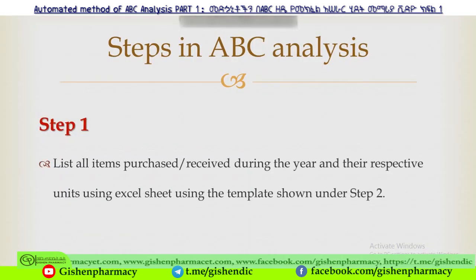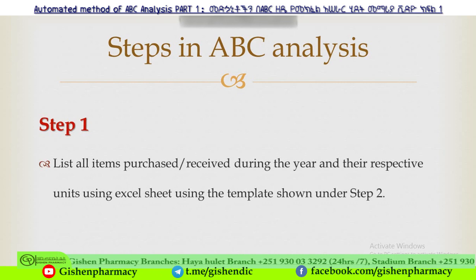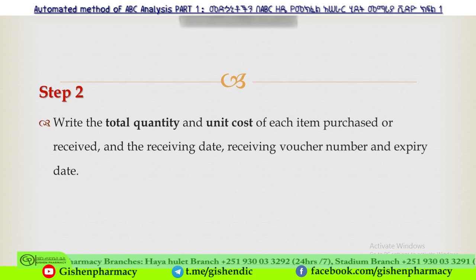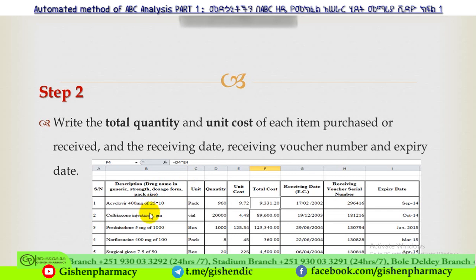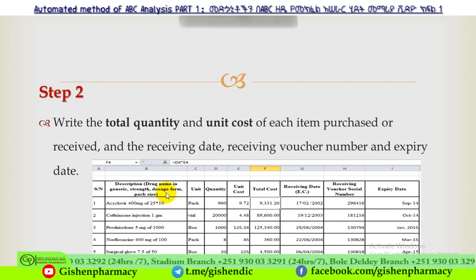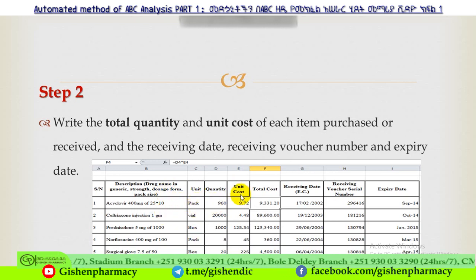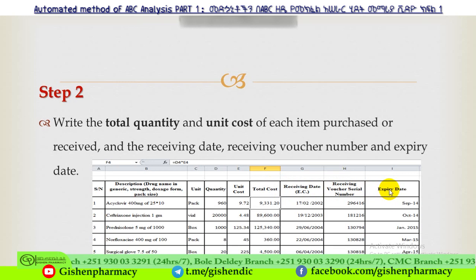Step 1: list all items purchased or received during the year and their respective units using the Excel sheet template. Step 2: list all items — for example, Acyclovir, Ceftriaxone, Prednisolone, Norfloxacillin. The columns include: drug type, description, generic name, dosage form, pack size, units, quantity, unit cost, receiving date, invoice/voucher number, and expiry dates.